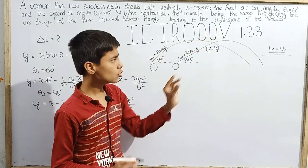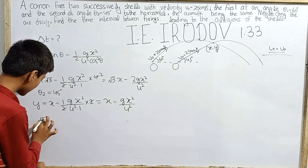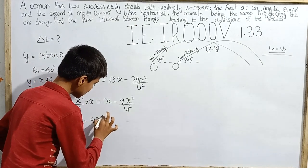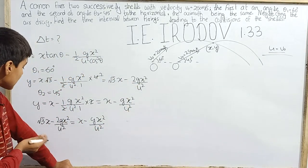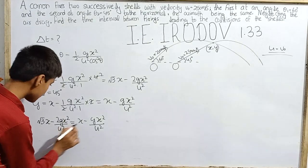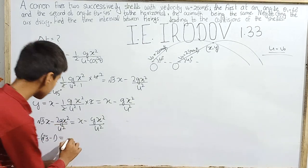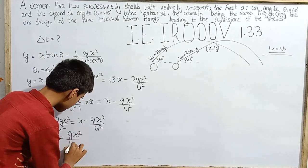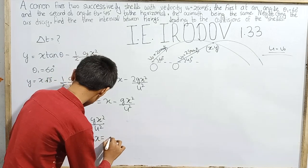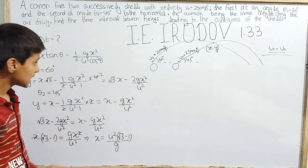Now since at the collision point both x and y coordinates are equal, that means y equals y. So I equate: root 3 x minus 2g x squared over u squared equals x minus g x squared over u squared. Taking terms to one side: root 3 minus 1 times x equals 2g x squared over u squared minus g x squared over u squared, which gives root 3 minus 1 times x equals g x squared over u squared. Canceling x, we get: x equals u squared times (root 3 minus 1) over g.